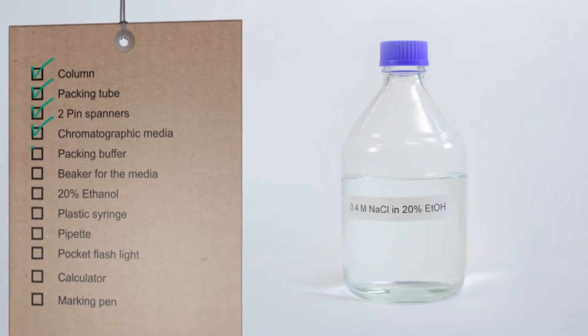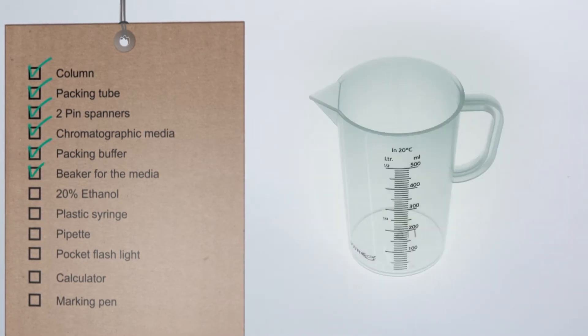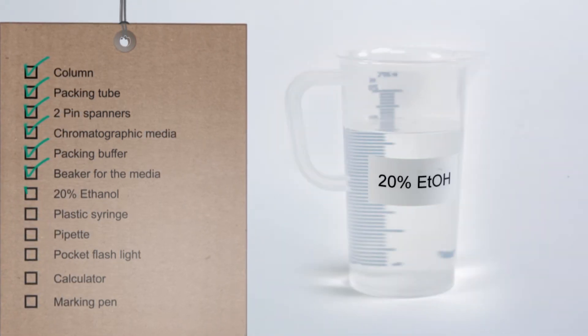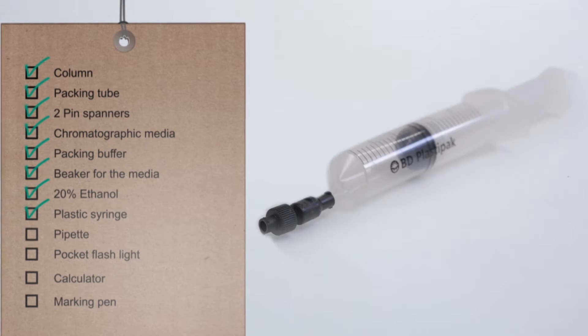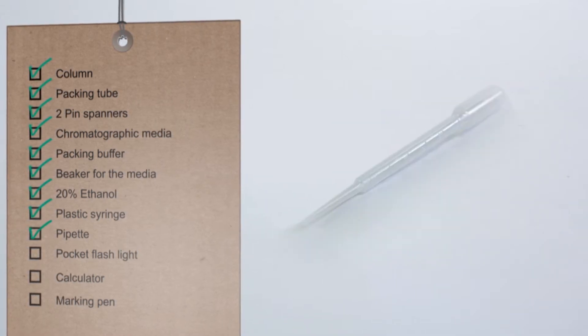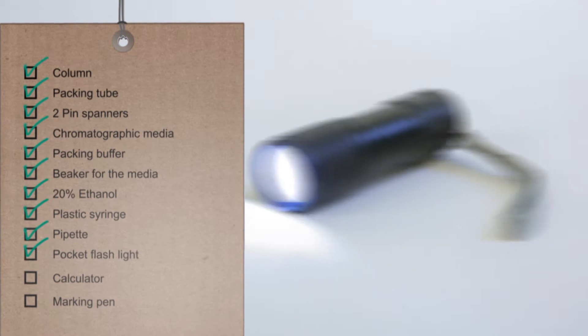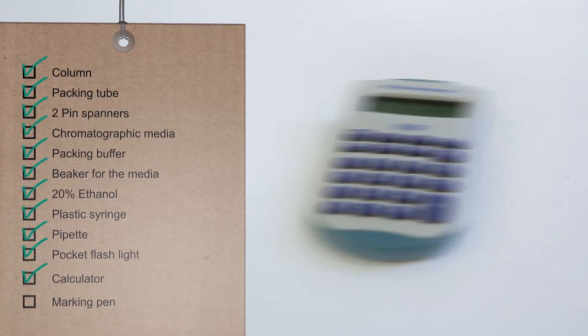You'll also need the packing buffer, a beaker for the media slurry, 20% ethanol, a plastic syringe, a pipette, a pocket flashlight, a calculator, and a marking pen.